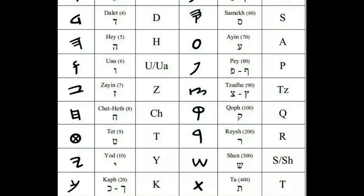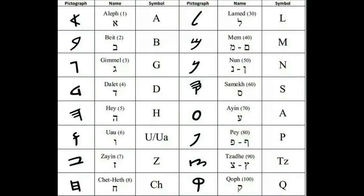The eleventh letter is the Kap, or Kaf as it's commonly known. In the modern it has two forms. It makes the K sound and pictographically means palm of hand, or open hand, to reveal. The next letter is Lam, or Lamad, which represents a staff — meaning to lead or to guide — because Yahudiith is a picture-based language. Next is Mam, which represents water and makes the M sound.